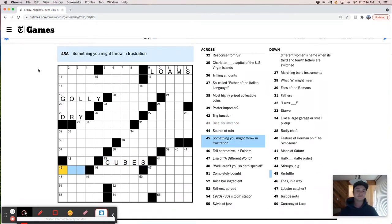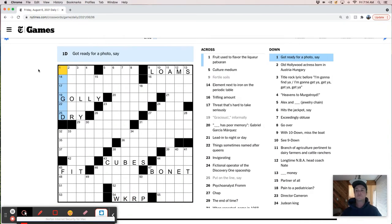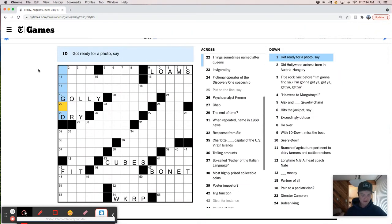Source of ruin. You might throw, in frustration, throw a fit. Alternative. So, like, I'm not sure. Lisa Bonet. Well, aren't you so darn special? Completely bought. Fathers. WKRP in Cincinnati. Got ready for a photo. I feel like this is something. We're going to be an E. Right?